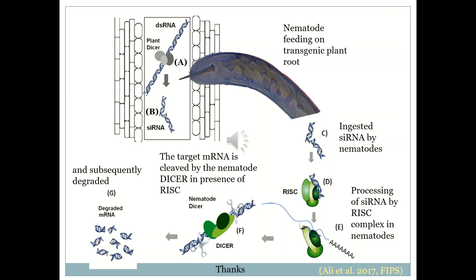As a result, the mRNA is cleaved by the RISC and subsequently degraded. Moreover, the targeted mRNA can be made double-stranded after binding of the small interfering RNA, and this double-stranded RNA is then processed to produce additional small interfering RNAs, intensifying the initial silencing signal. This is how host-induced gene silencing works in plant-nematode interactions.